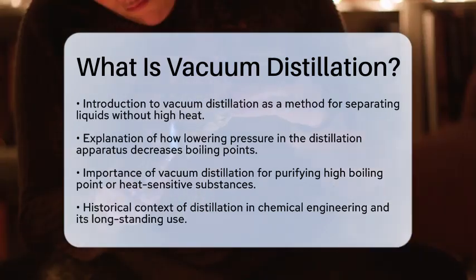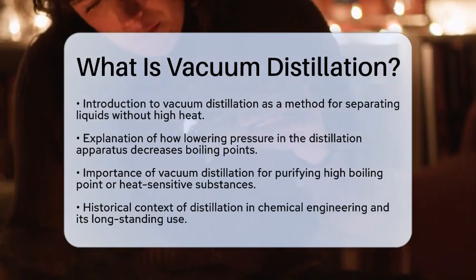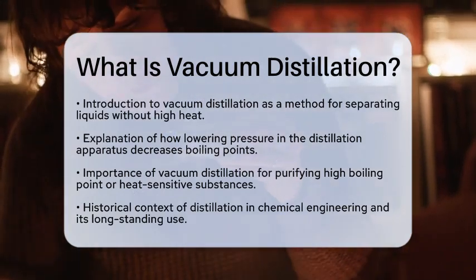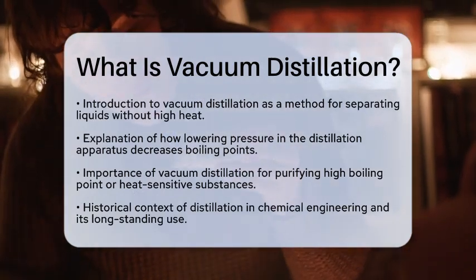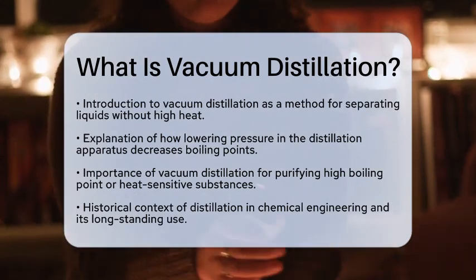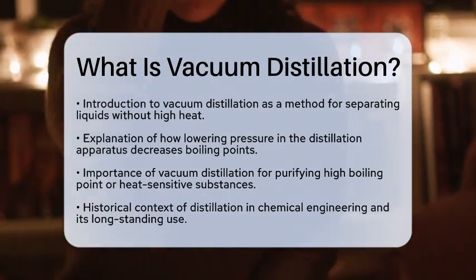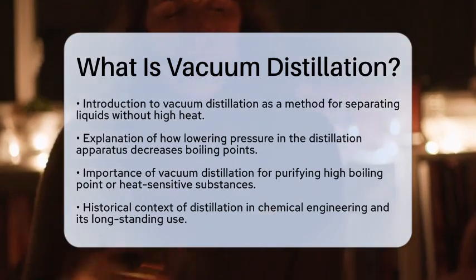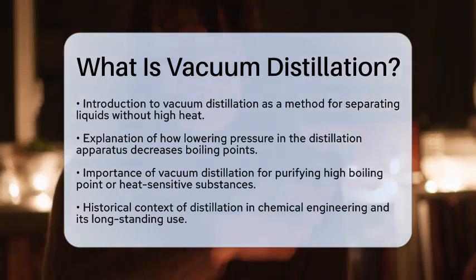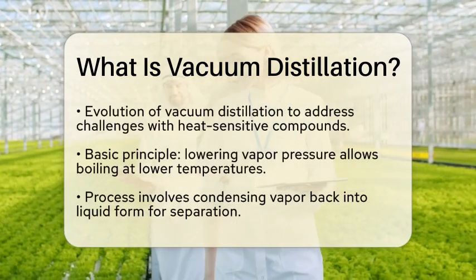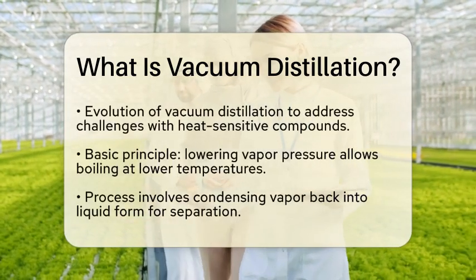Vacuum distillation is particularly useful for purifying substances that have high boiling points or are sensitive to heat. For instance, some compounds might decompose or react if heated to their regular boiling points. By using vacuum distillation, chemists and engineers can separate these substances without damaging them.